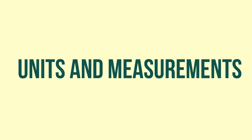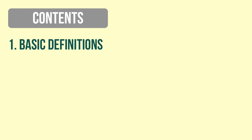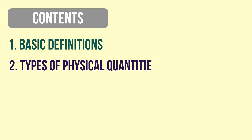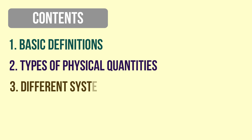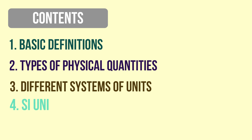In this video we are going to discuss the following points. First, we will discuss the basic definitions related to this topic where we will see what is measurement, what are the units, and what are physical quantities. After that we will discuss types of physical quantities. Once done, we will look into various systems of units that were used in the past to measure physical quantities.